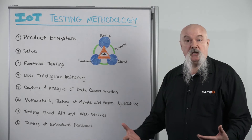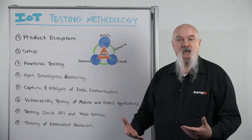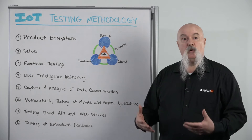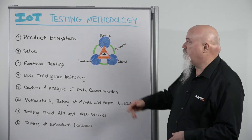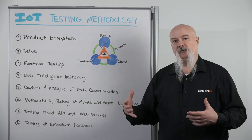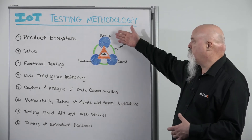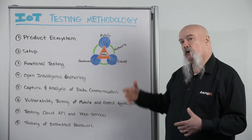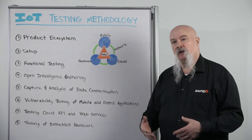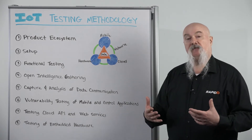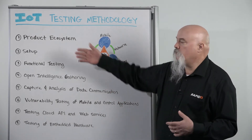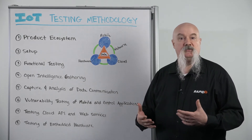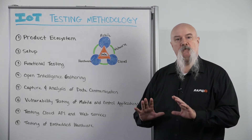When we engage on doing IoT testing, we need to have a standard methodology. The first thing we want to do is identify the full product's ecosystem. Often this will include mobile, cloud, hardware, and also the network communication that involves this. Once we have identified that entire ecosystem, we want to focus on setup. The goal is to set up the product's entire ecosystem in a full functioning manner.